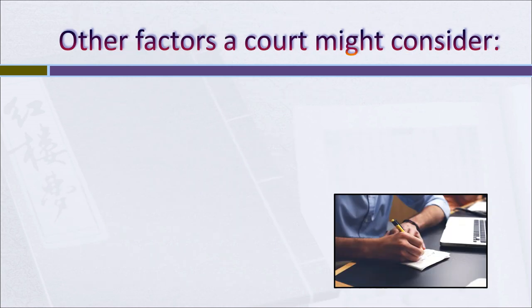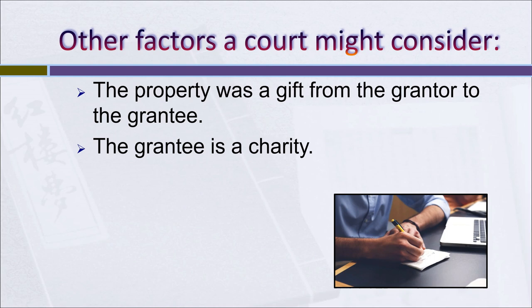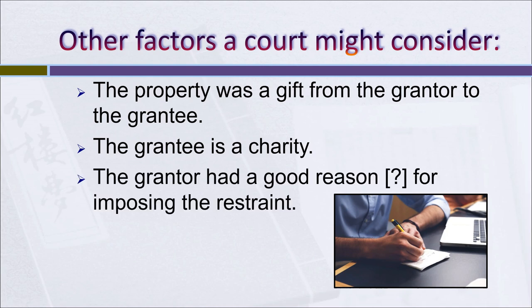Other factors a court might consider: if the property was a gift from the grantor to the grantee, courts are more likely to uphold the restraint. If the grantee is a charity, courts are fairly willing to let donors restrain what the charity can do with the property after receiving it. And if the grantor had some other good reason — for example, if the grantor had reason to believe the grantee was profligate, unreliable, or had poor judgment — the court might be more likely to uphold the restraint on the grantee's alienation.